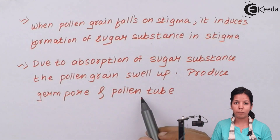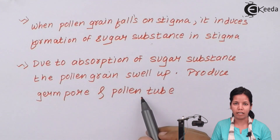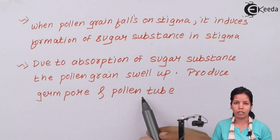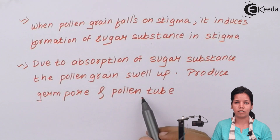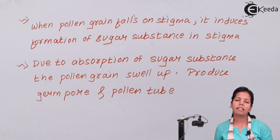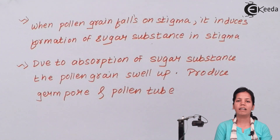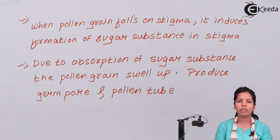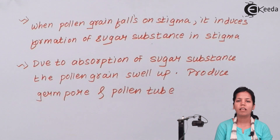In this way, pollen-pistil interaction enhances the process of fertilization and keeps it on track when there are many pollen grains present. In this part of the chapter we have studied pollen-pistil interaction. I hope you are clear with the concept. Thank you.